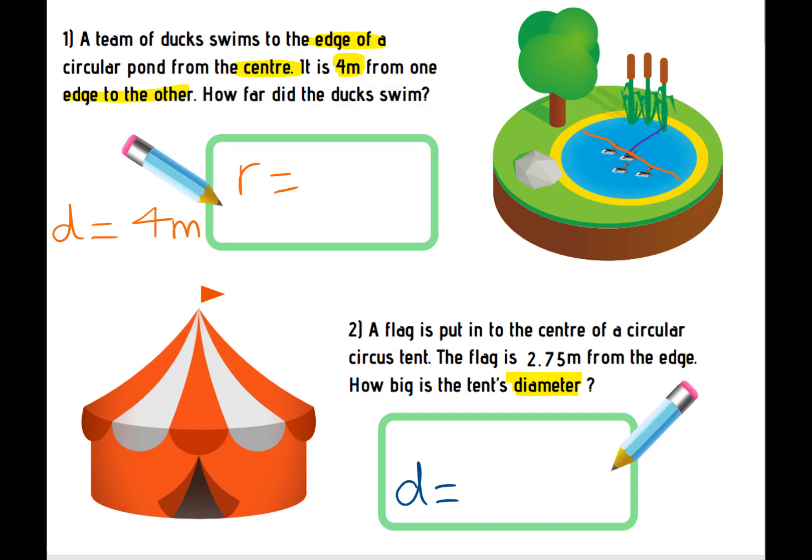What clue do we have? Well, we've got that the flag is 2.75 metres from the edge. So if we had our circle, it's 2.75 metres from the edge and we know that it's in the centre because it says in our word problem, it's put in the centre. So we know what the radius is. We know that the radius is 2.75 metres because the clues are telling us that it's the centre of a circle and it's 2.75 away from the edge. Let me change that to 2.75. How are we going to use the radius to help us find out what the diameter is?